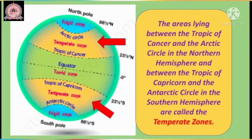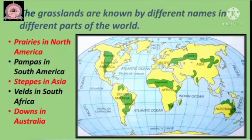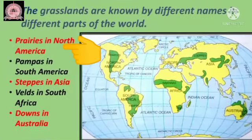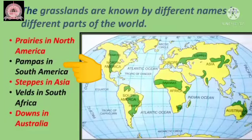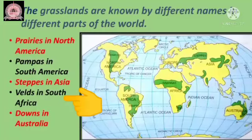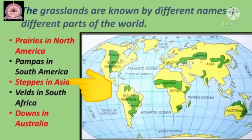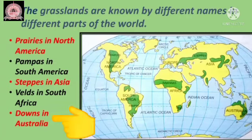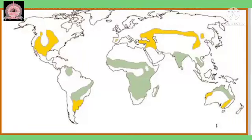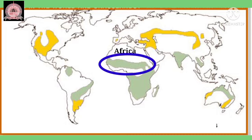My dear children, the grasslands are known by different names in different parts of the world. Prairies in North America, Pampas in South America, Veld in South Africa, Steppes in Asia, and Downs in Australia. Please remember, there is another grassland in central Africa that lies in the torrid zone, named Savannah.